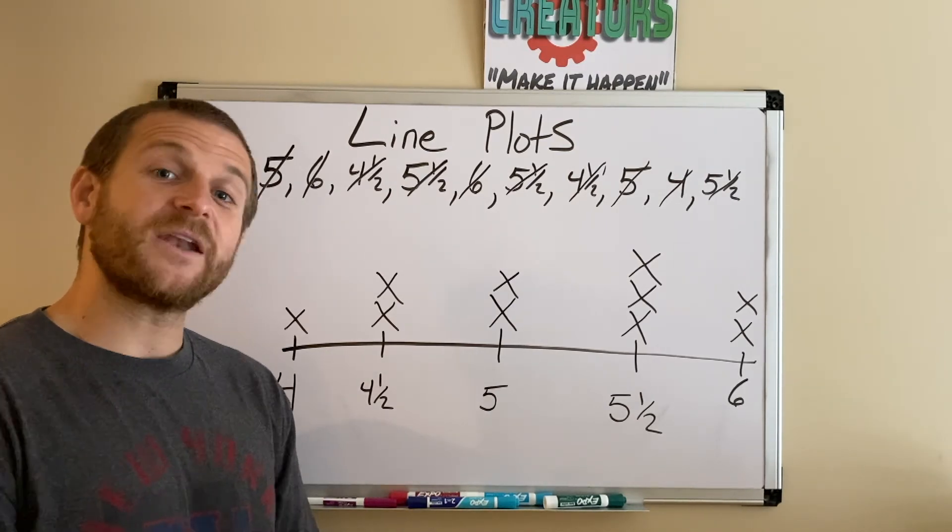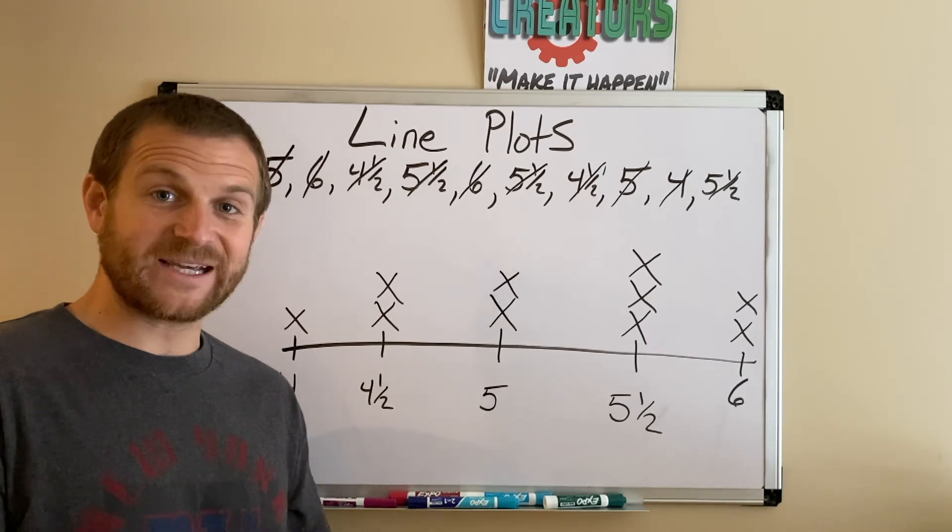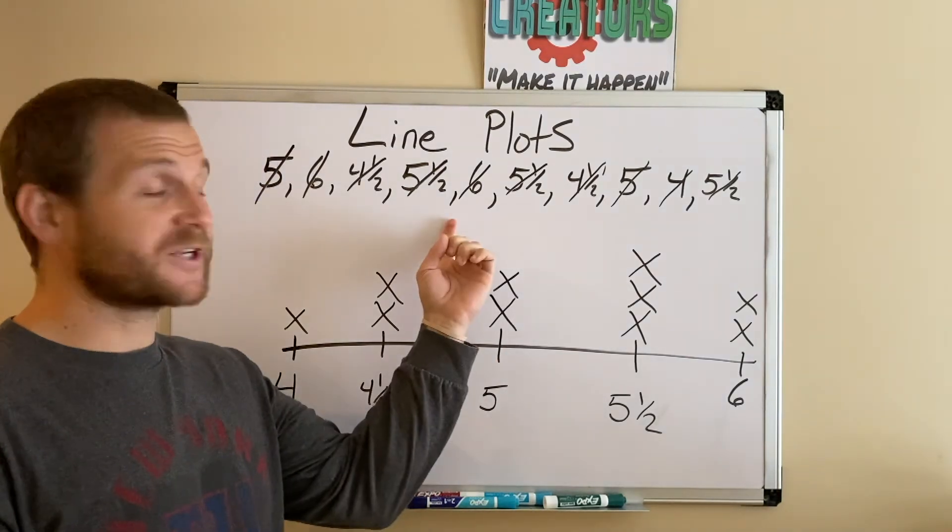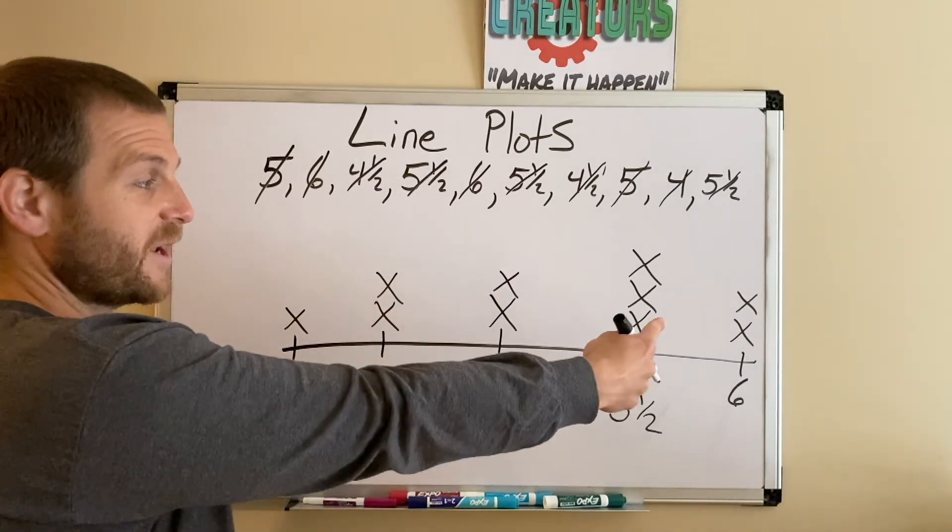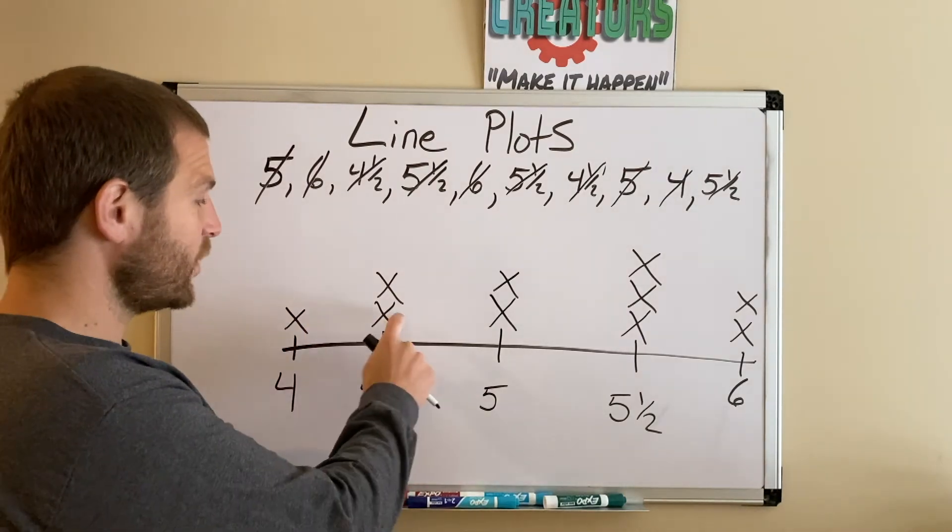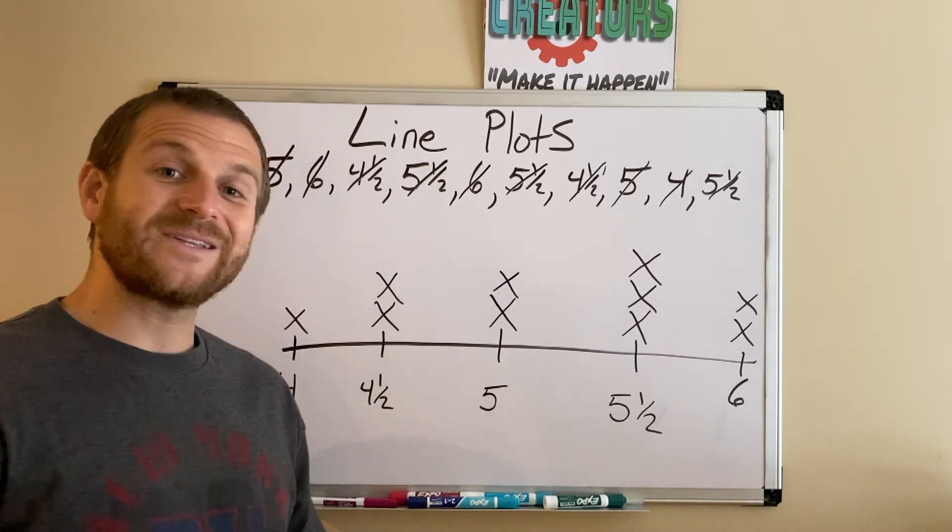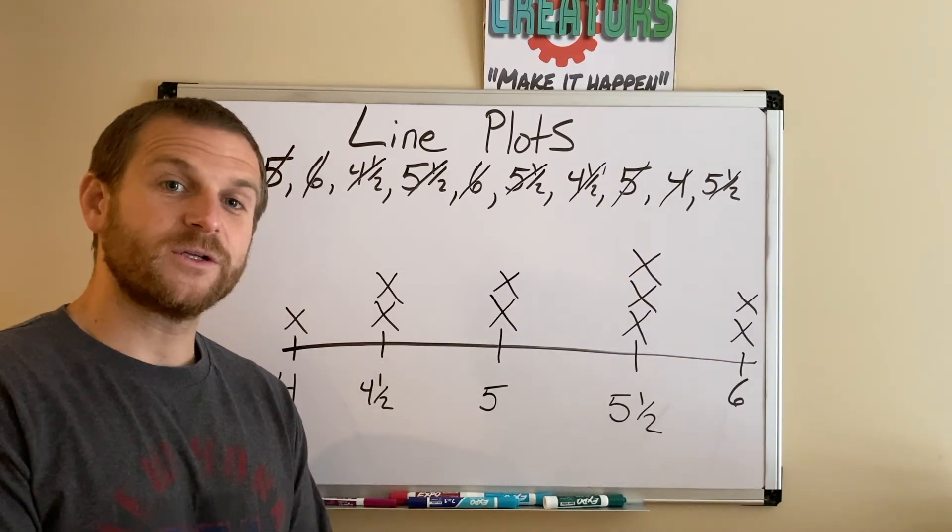Another question you might be asked is how many students did we time? You can either go to your data points up here or just look right on here - each X represents one student. So I can just count them up: 1, 2, 3, 4, 5, 6, 7, 8, 9, 10. We timed 10 total students.